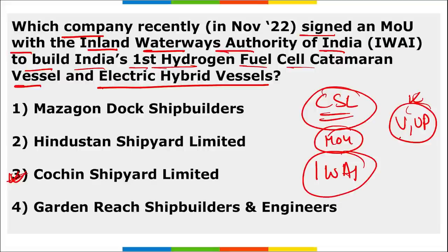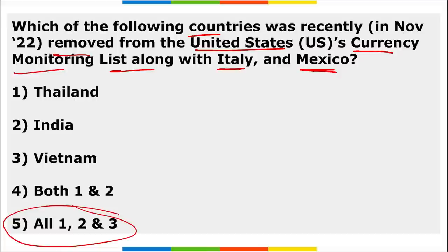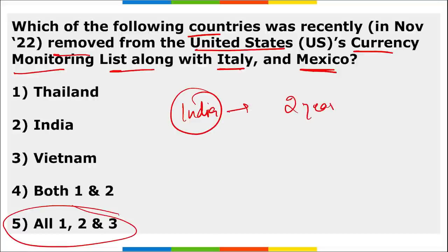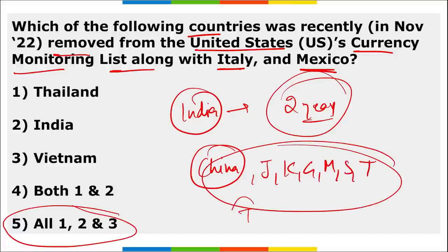Which countries were recently removed from the United States currency monitoring list along with Italy and Mexico? They are India, Thailand, and Vietnam. India had been on this list for the last two years. The countries currently on the US currency monitoring list are: China, Japan, South Korea, Germany, Malaysia, Singapore, and Taiwan — seven countries in total.